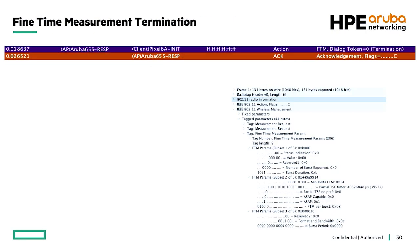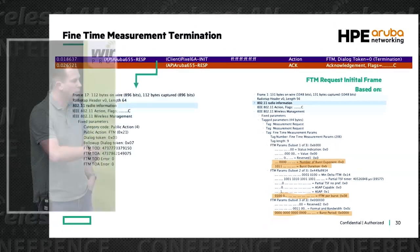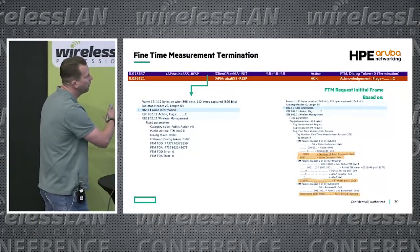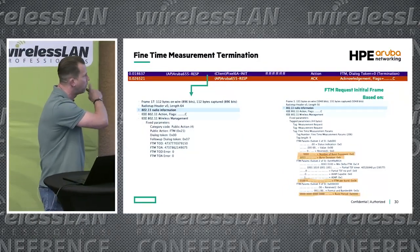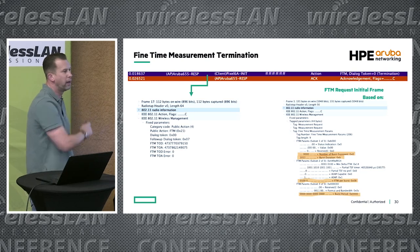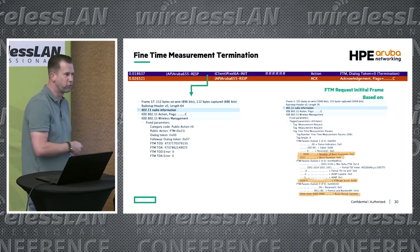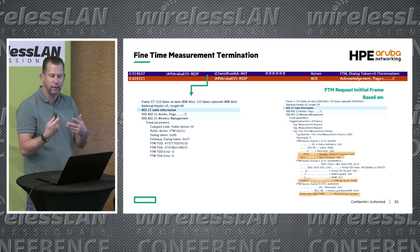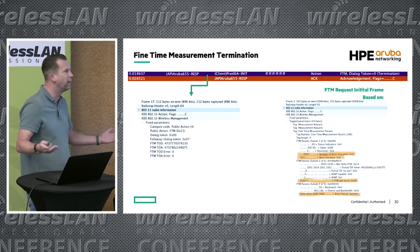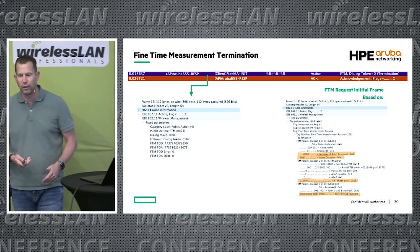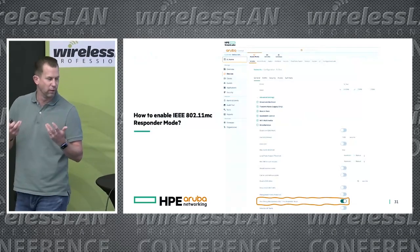Then comes the termination — we need to terminate the session afterwards. You can see the number of bursts, the duration, and what the burst period was from the initial FTM request frame. On the last message, the dialogue token is zero, indicating this is the last burst, and the session is terminated.